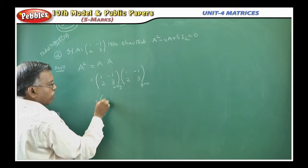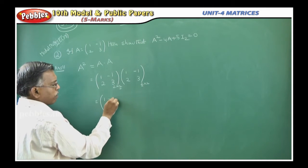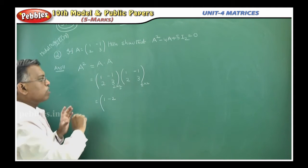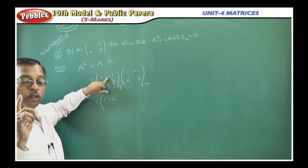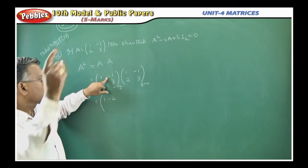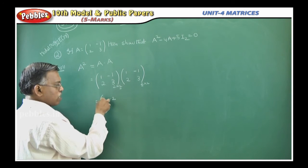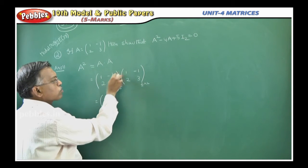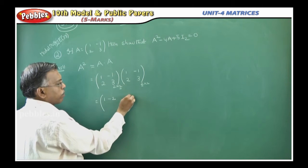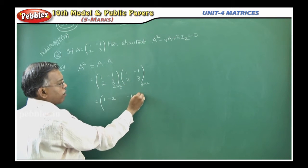First row, first column, 1 into 1 is 1, minus 1 into 2, minus 2. After multiplication also, you should put in the same place, same position. First row, first column. First row, second column, 1 into minus 1, minus 1, minus 1 into 3, minus 3.